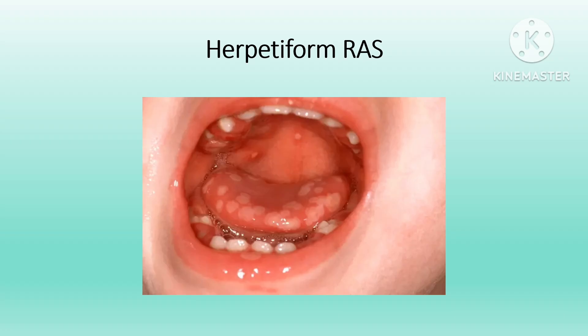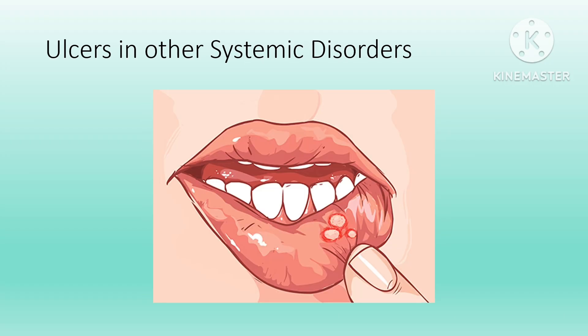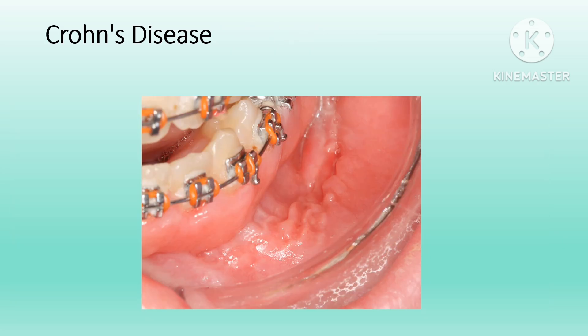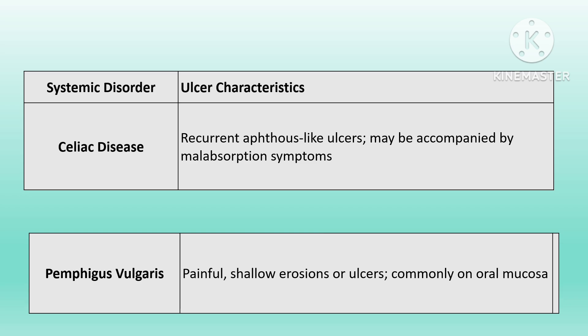Oral ulcers can also be manifestations of systemic diseases. Systemic causes often present with recurring or persistent ulcers that do not respond to standard local treatments. Autoimmune diseases include systemic lupus erythematosus, pemphigus vulgaris, and bullous pemphigoid — the latter more common in older adults, leading to blistering oral ulcers. Gastrointestinal disorders: Crohn's disease causes deep, irregular ulcers on the buccal mucosa or palate, while celiac disease may cause recurrent oral ulcers, especially on the tongue and cheek, due to gluten intolerance.